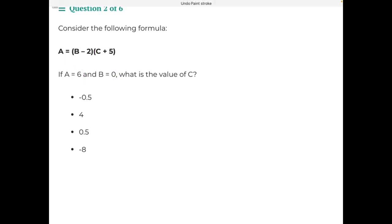Let's start by substituting in our values. A is 6, so 6 equals, instead of B, we put 0 minus 2, and we don't know C yet, so C stays the same.